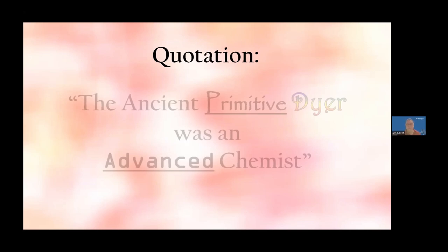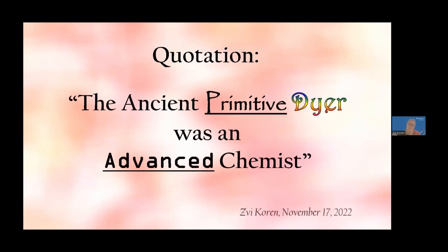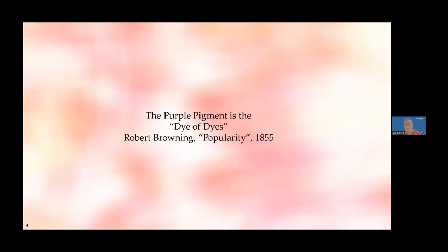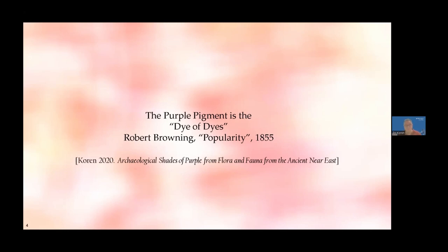Professor Koren opens with a self-coined quotation: 'the ancient primitive dyer was an advanced chemist.' He references an article of his on the modern chemistry behind the wonders of ancient dyeing. He also cites Robert Browning's 1855 poem 'Popularity,' which described the purple pigment from sea snails as 'the dye of dyes' — a wonderful expression. He calls it the apex of dyes, also referencing the biblical Song of Songs and his own article on 'Archaeological Shades of Purple.'